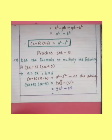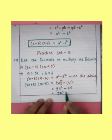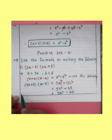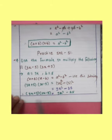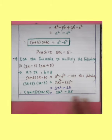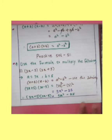The answer is 9 x square minus 25. This is the final answer. Thrice X plus 5 into thrice X minus 5 is equal to 9 x square minus 25.